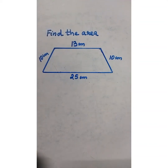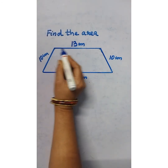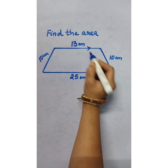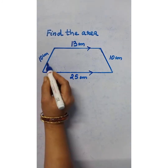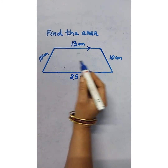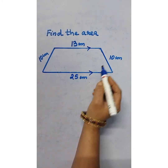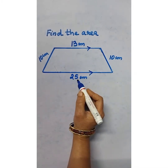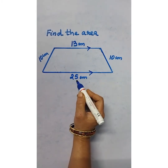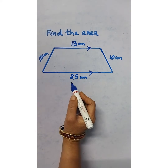Let's find the area of this trapezium. These are the two parallel sides, and these are the non-parallel sides. Both non-parallel sides are equal in length. This is 13 centimeters and this is 25 centimeters — these are the given measurements. Now, how do we find this area?